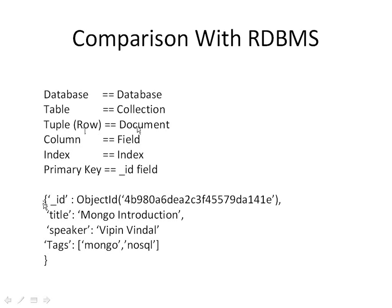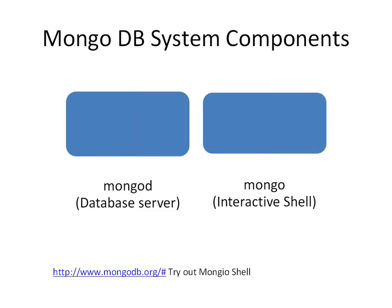Let's see how a sample entry in a MongoDB database looks. We have an id which is basically a primary key generated by MongoDB. We have attributes: title is 'mongo introduction', speaker is 'weapon', and there are some tags which are 'mongo' and 'nosql'. If I want to query — give me entries where the title is this and the tag contains 'nosql' — these kinds of queries are very easily supported.